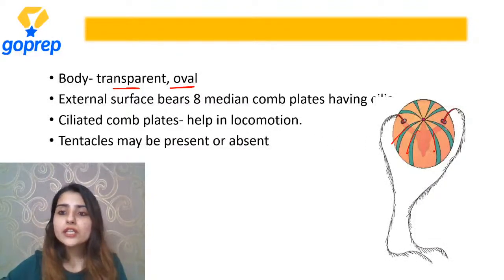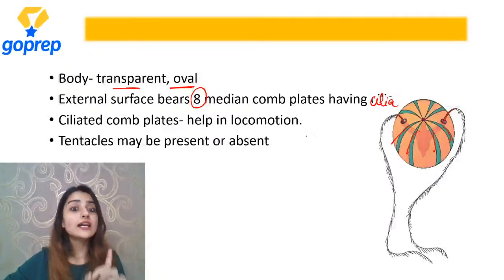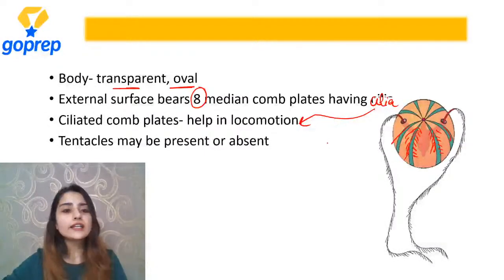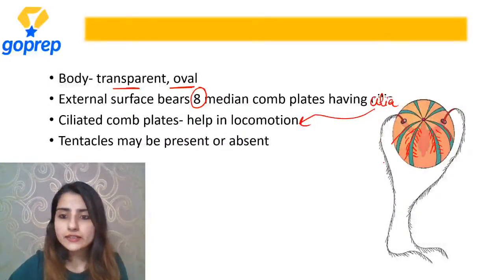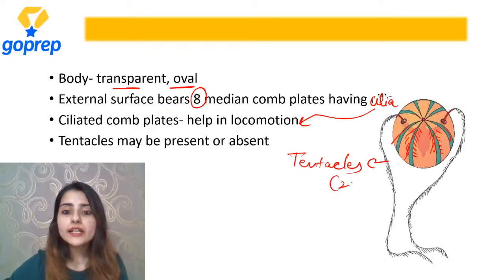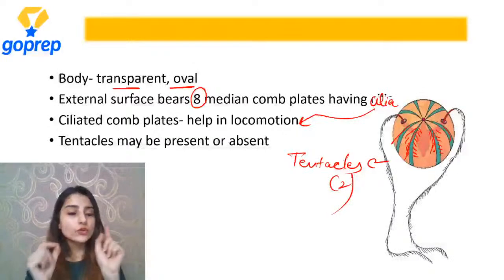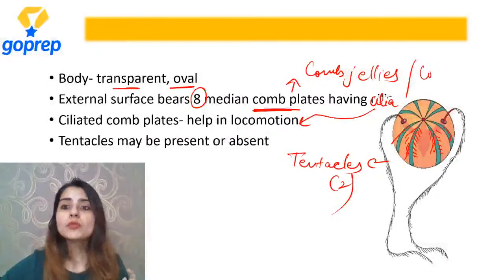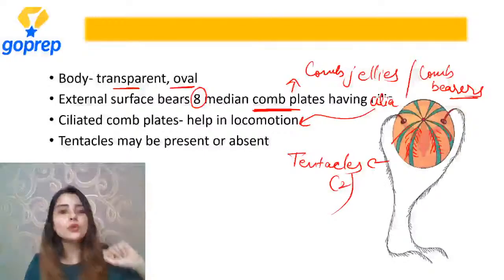Ctenophore ki body generally transparent and oval hoti hai. Look at this NCERT diagram - body ke oopar there would be comb plates. These are the comb plates - number pooccha jaata hai inka - kitni comb plates hain? Eight. In comb plates ke paas kya present hai? Cilia. Cilia is present and this cilia helps in locomotion. Tentacles ho bhi sakte hain nahi bhi - if present then number hoga two. Special feature - presence of comb plates, isi liye inko comb jellies bola tha. Comb plates ke oopar cilia hain jo locomotion mein help karte hain.